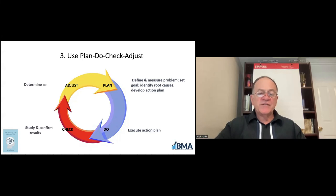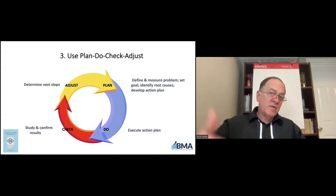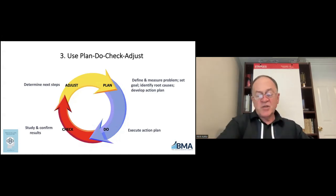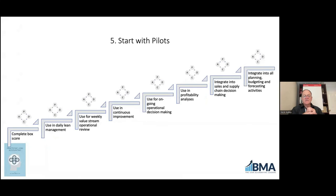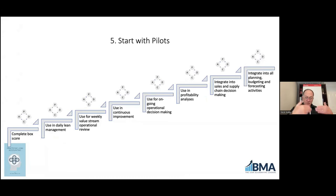Plan-do-check-adjust is the scientific method, also known as A3 thinking and lean problem solving. It's really important to employ this in the transition plan and to deal with problems and obstacles you will encounter. Start with pilots — start with one value stream, or if you're a smaller company, one location. You want to demonstrate how lean accounting improves decision making. When you demonstrate it, you move on — and the people who experience improved decision making become your chief marketing people about the benefits of lean accounting.